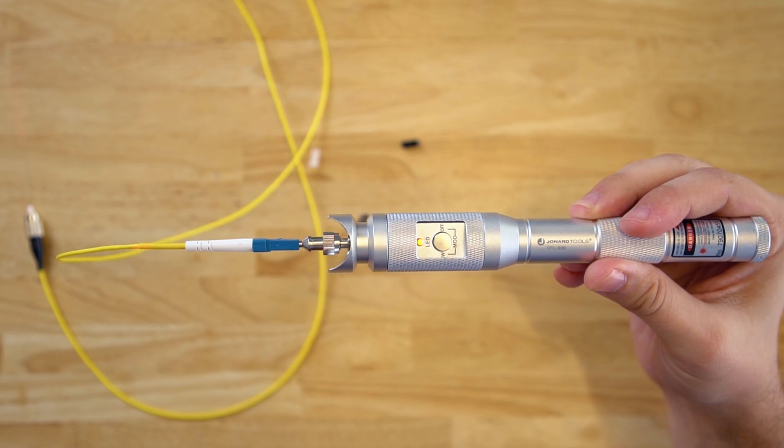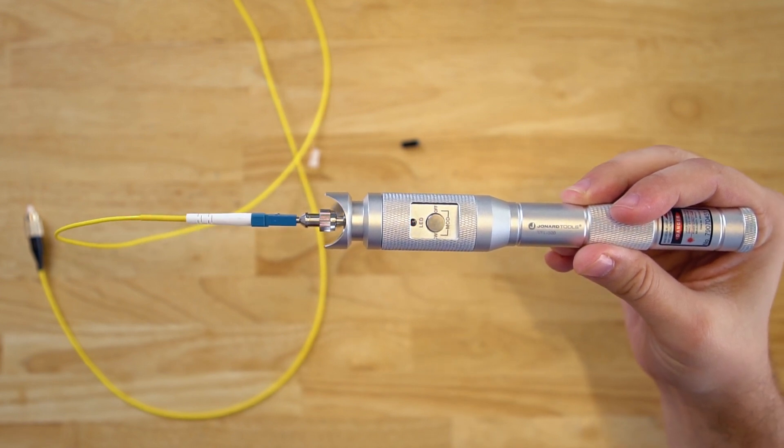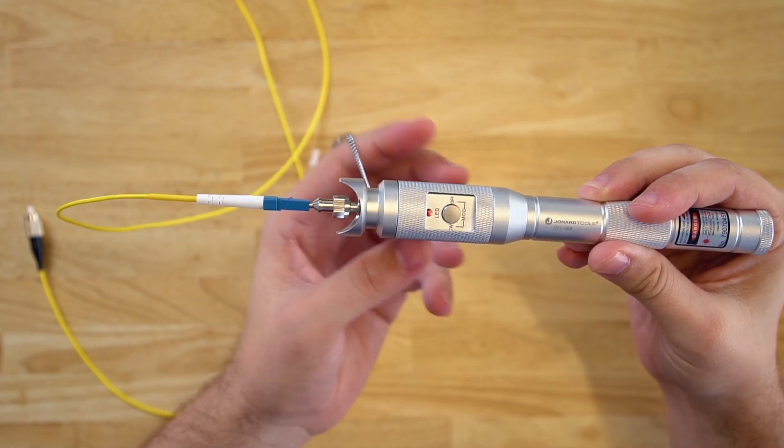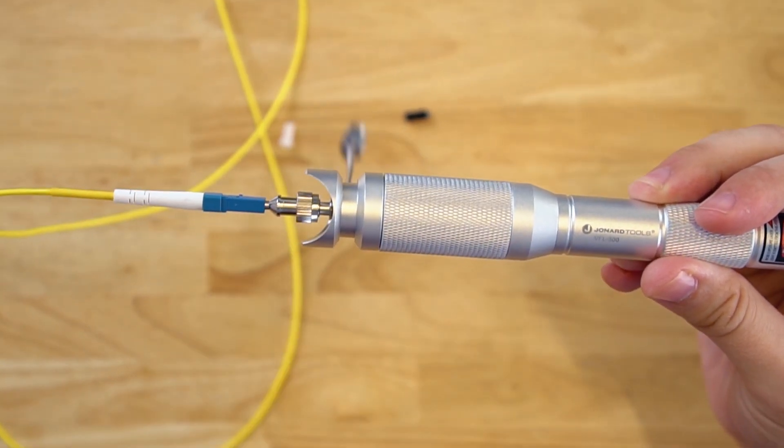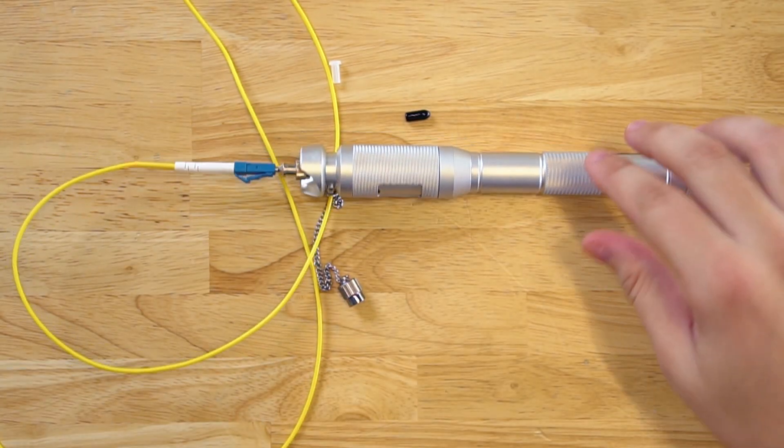If you are testing a very long fiber optic cable, and you want to prevent any accidental button presses, you can simply slide the protective sleeve over, and leave the VFL down while you inspect the fiber optic cable.